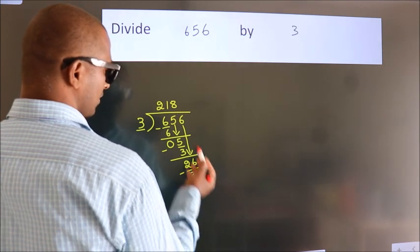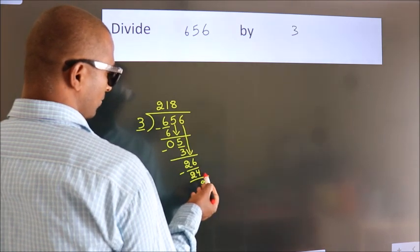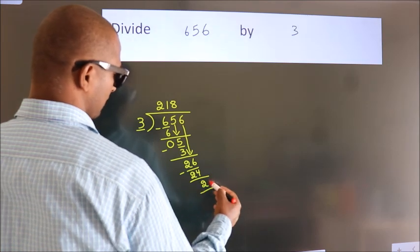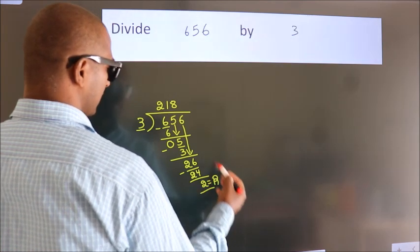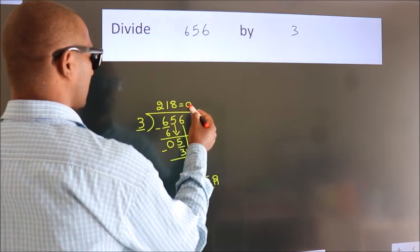After this, no more numbers to bring it down. So, we stop here. This is our remainder. This is our quotient.